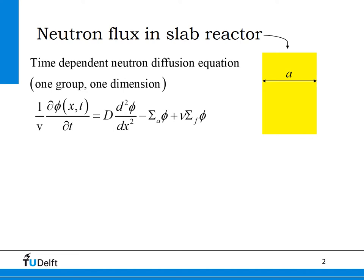We start with the one-group time-dependent neutron diffusion equation for the neutron flux phi. In this equation, v is the neutron velocity, D is the diffusion coefficient of the core region, sigma-a is the absorption cross-section of the core region, and nu-sigma-f is the product of the number of neutrons per fission event multiplied with the macroscopic fission cross-section of the core region. The first term on the right-hand side gives the neutron leakage rate in diffusion theory. The second term is the neutron absorption rate, and the third term is the neutron production rate due to fission. The resultant of these three terms determines if the neutron flux increases or decreases in time, or remains stationary.